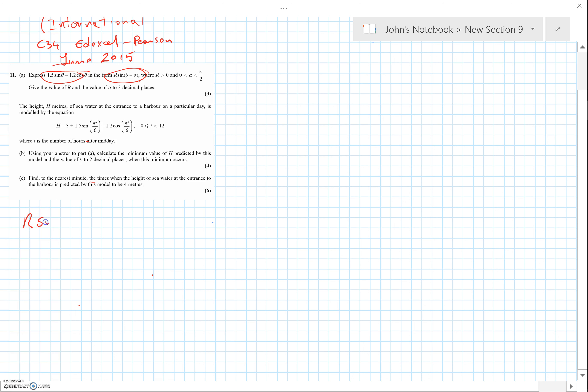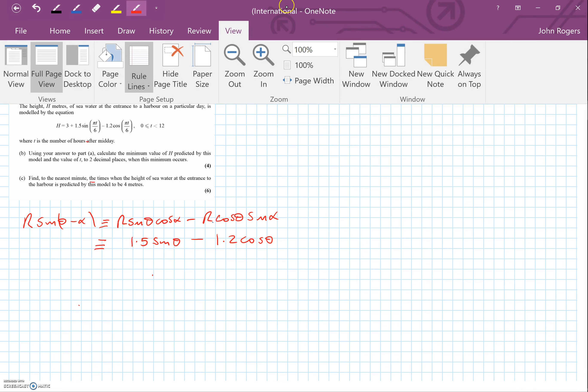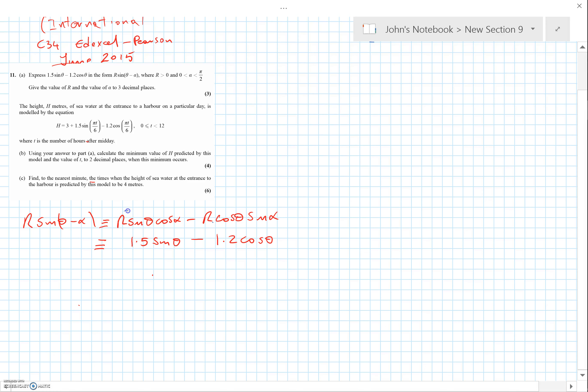If we expand R sin(θ - α) we get R sin θ cos α minus cos θ sin α. But that's also going to be the same as what we're actually comparing it to, which is 1.5 sin θ minus 1.2 cos θ from above.